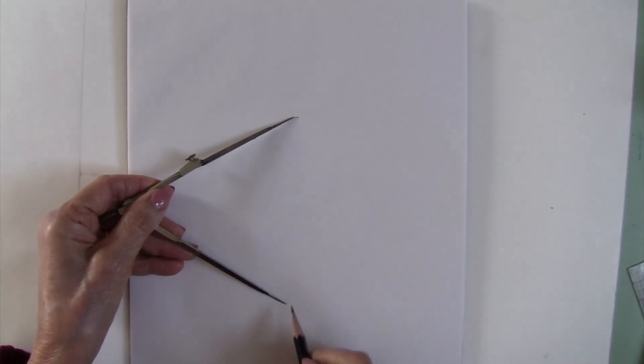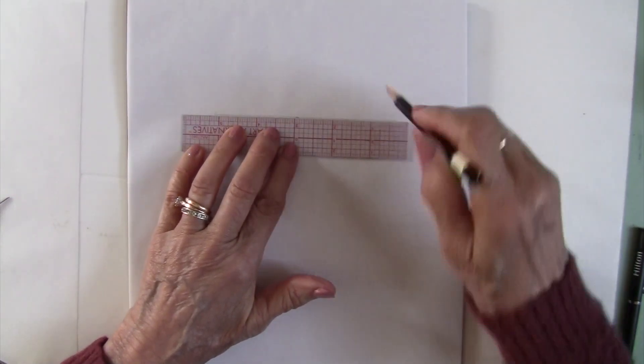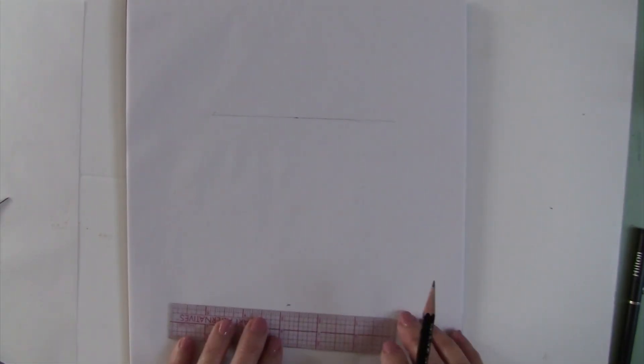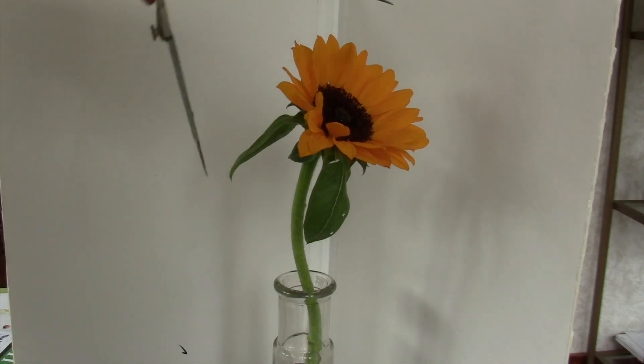So here are the marks for the height of the flower. You can draw a line across. Draw a parallel with the edge of your board and you'll be in pretty good shape.